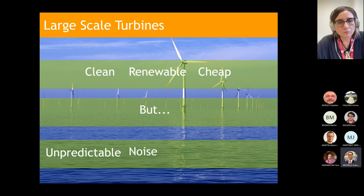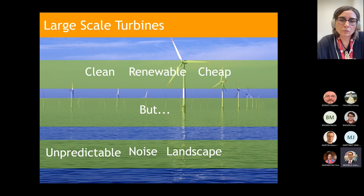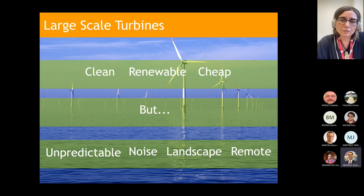When wind turbine blades rotate, they produce noise, which doesn't provide a good environment in the vicinity. Some people also consider wind turbines a bad feature of the natural landscape. Additionally, offshore wind turbines suffer from transmission losses — power lost as heat in the wires from point of generation to point of usage. There are also infrastructure costs associated with building roads to access remote areas for maintenance of these wind turbines.